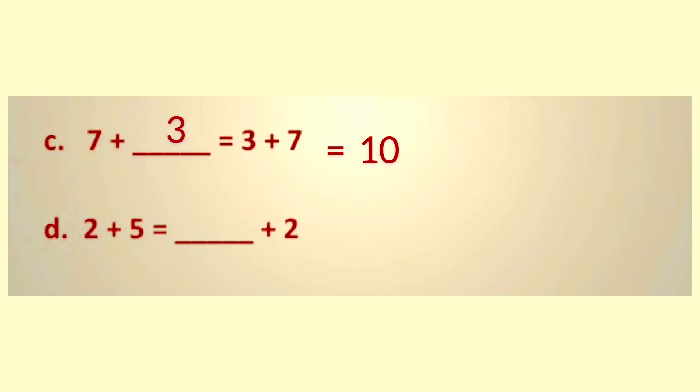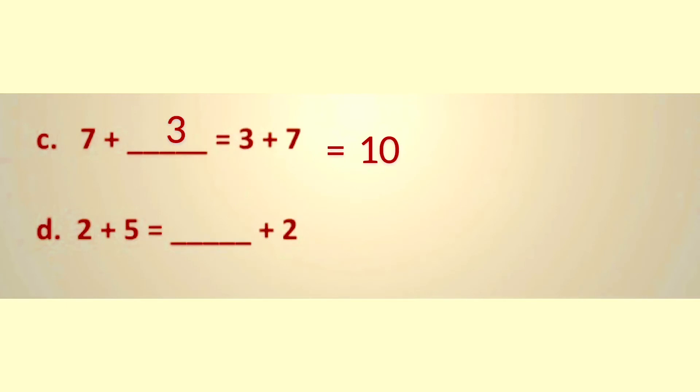Now we go to the third question. Seven plus dash equals three plus seven. In the right-hand side, it is already written as three plus seven, so the answer is there itself. What will be on the left-hand side? Seven plus three. Then we check the sum. What is seven plus three? Eight, nine, ten. And what is three plus seven? Four, five, six, seven, eight, nine, ten. For both sides, the answer is the same. That is ten.